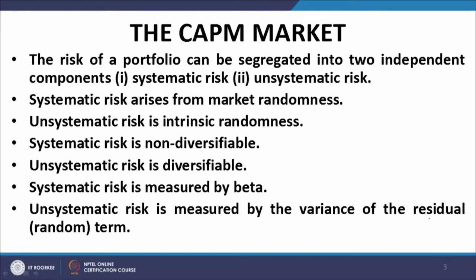The systematic risk is measured by the regression coefficient between the market returns and the individual security or portfolio returns, with the market returns being the independent variable and the security or portfolio returns being the dependent variable. It is called beta. So systematic risk is measured in terms of beta. Unsystematic risk, on the other hand, is the variance associated with the residual term when we write the CAPM equation.